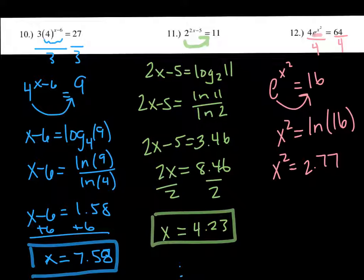And then you just take the square root of both sides. Remember, we take the square root, positive and negative value. About 1.67.